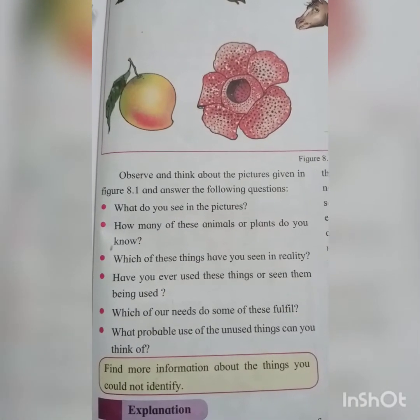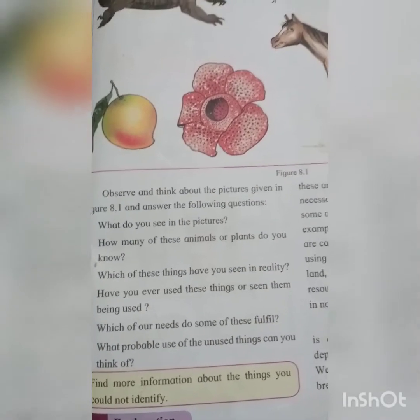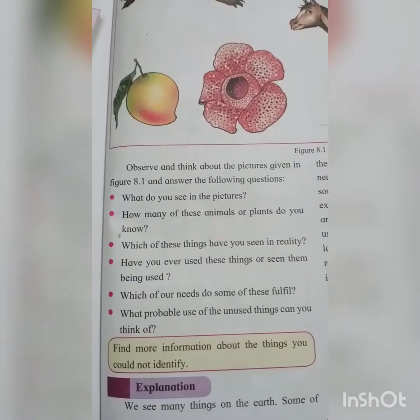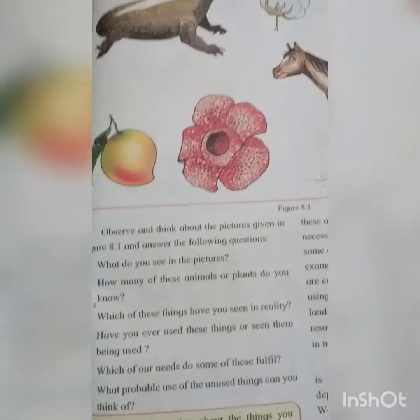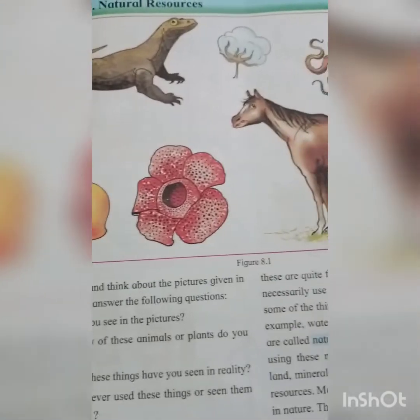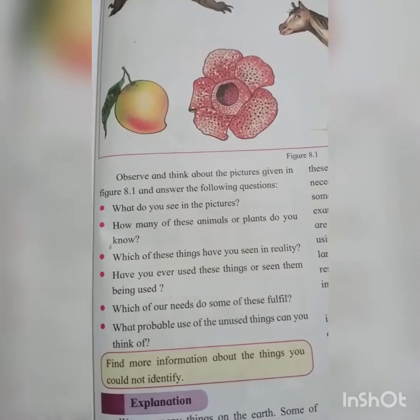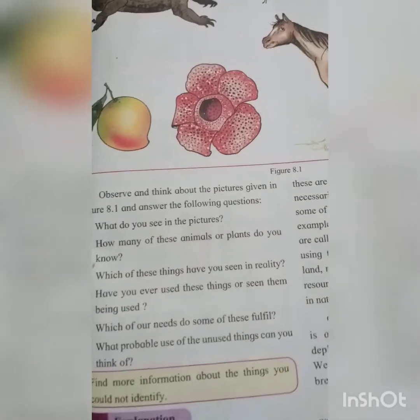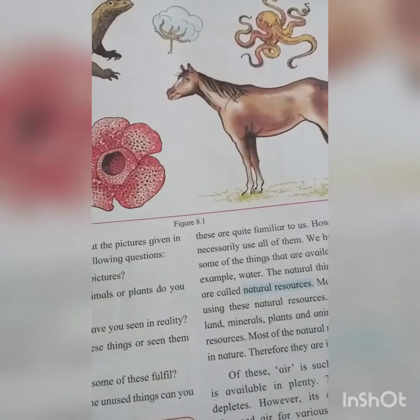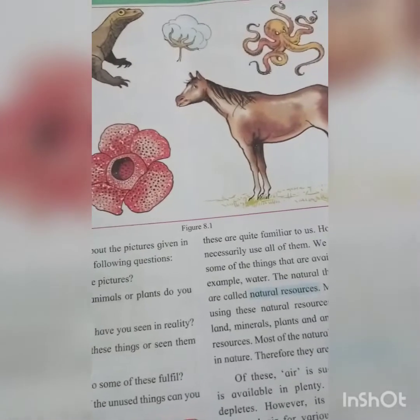Next question: how many of these animals or plants do you know? You know all the animals and plants in the given picture. Third question: which of these things have you seen in reality? You have seen mango fruit, horse, and cotton in reality. Have you ever used these things or seen them being used? Yes, you have. Which of our needs do some of these fulfill? Horse is used in transportation, mango is a fruit we eat, and cotton is used to make clothes.